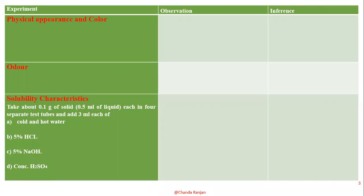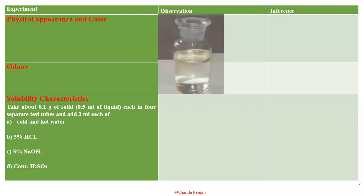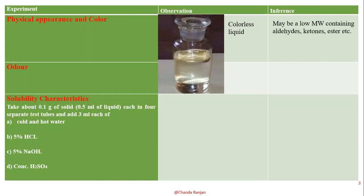We'll start with the preliminary investigations, which first includes physical appearance and color. This is the unknown compound — as you can see, it is a colorless liquid. It can be a low molecular weight compound containing aldehydes, ketones, esters, etc.